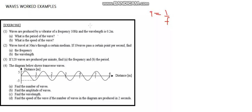Now, the period of the wave — period is equal to the time taken to make one complete oscillation. It's the time taken to make one complete oscillation. There's a formula that relates period and frequency: period is equal to 1 over frequency.